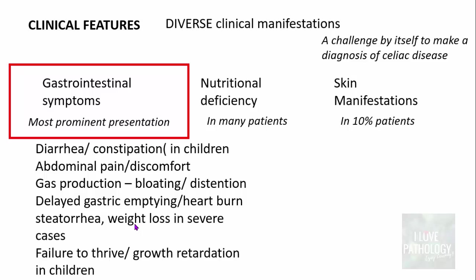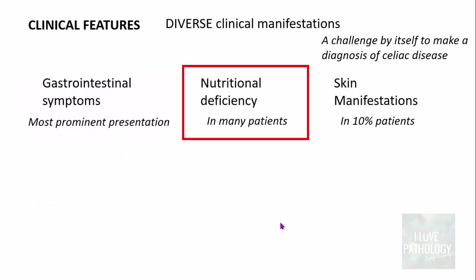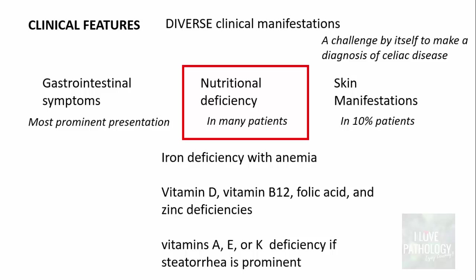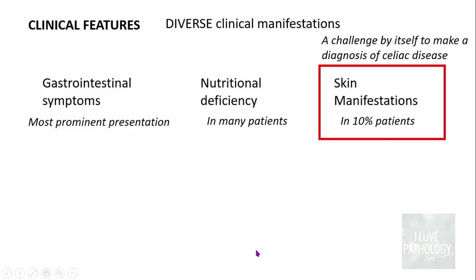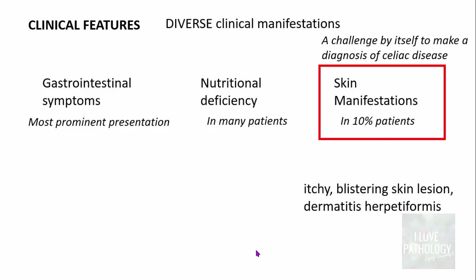In children, there is failure to thrive and growth retardation. Regarding nutritional deficiencies due to malabsorption, there can be iron deficiency with anemia, deficiencies of vitamin D, vitamin B12, folic acid, and zinc. If steatorrhea is predominant, patients can manifest with vitamin A, E, or K deficiency. Skin manifestations include itchy blistering skin lesions or dermatitis herpetiformis.